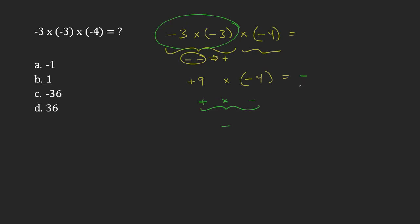Now that I've dealt with what the sign is going to be, I can just focus on the numbers. So nine times four is 36. So this is going to be negative 36 is my answer. So the answer is C.